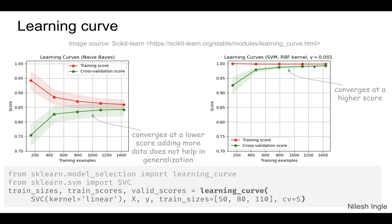That's a sign where you can add more data to the training set to increase the accuracy of the model, whereas on the left hand side adding more data to the training is probably not going to help.